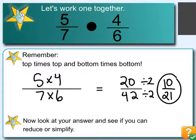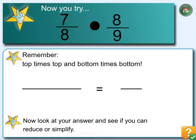You might say, couldn't we do that beforehand with the 4 sixths? Yes, we can. We can simplify it to 2 thirds, so that we multiply 5 and 2 getting us 10, and 7 and 3, which is 21. So you can reduce before and multiply, or multiply first and then reduce — it doesn't matter. Either way will work.